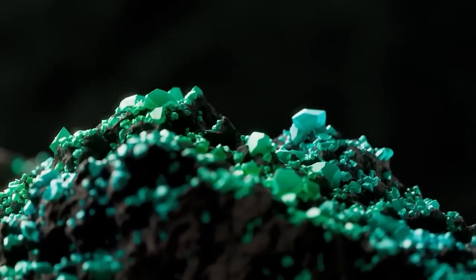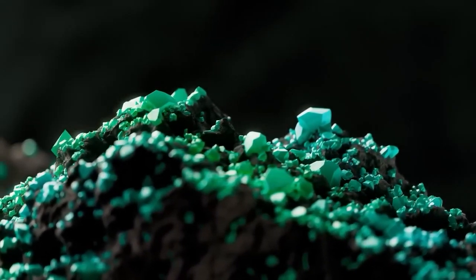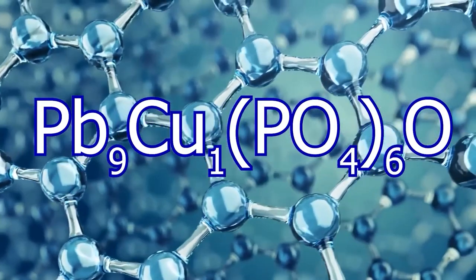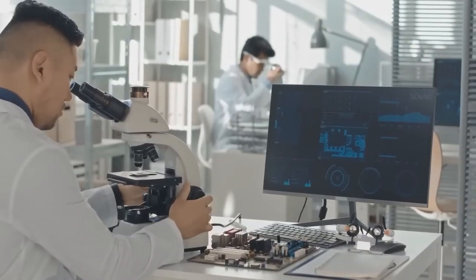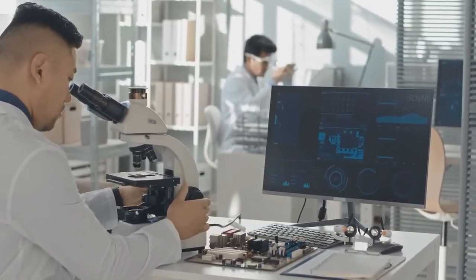The material, known as LK99, is a copper-doped lead apatite with a chemical formula like this. It becomes a superconductor at just 127 degrees Celsius, and remarkably, it does so even under normal pressure.